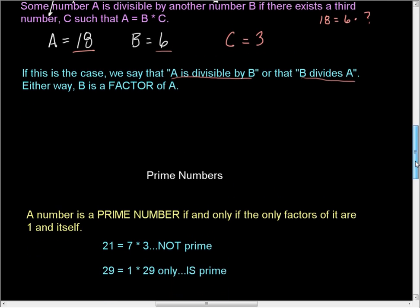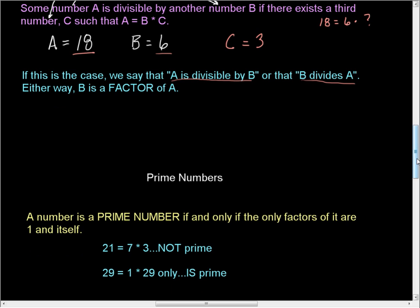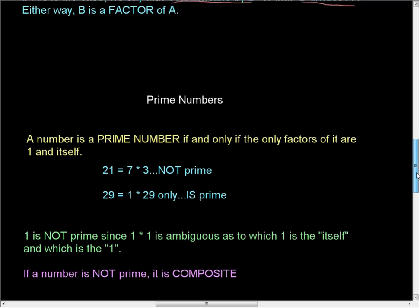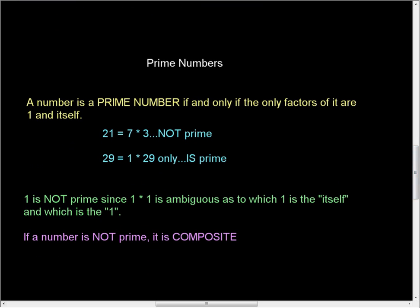So that kind of leads into this idea of prime numbers. What happens if C and A are the same? Well, you have this thing called the prime number. A number is a prime number. And again, this should be natural number. The natural number is a prime number if and only if the factors of it are 1 and itself.